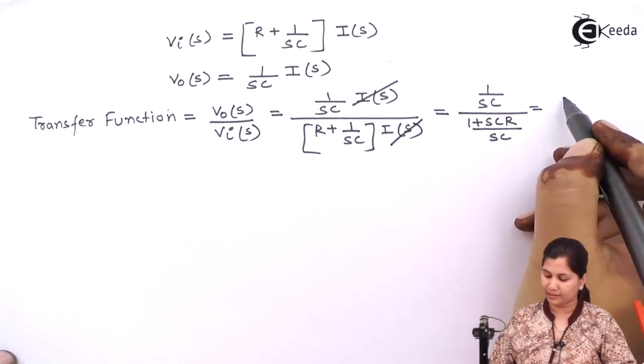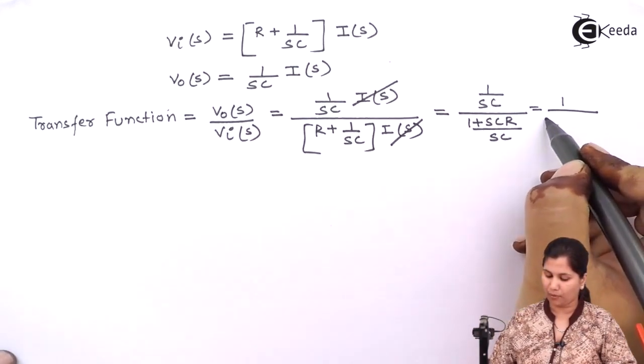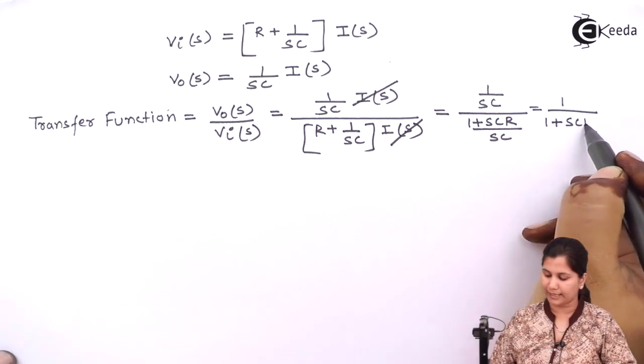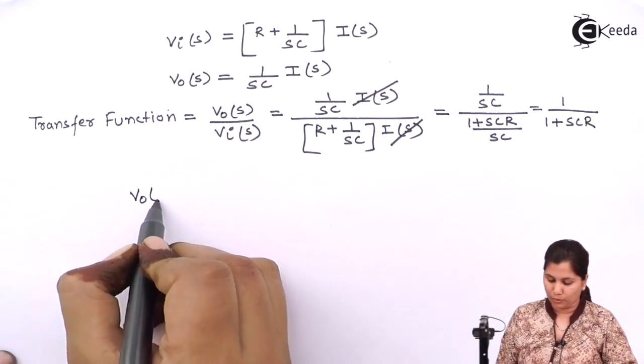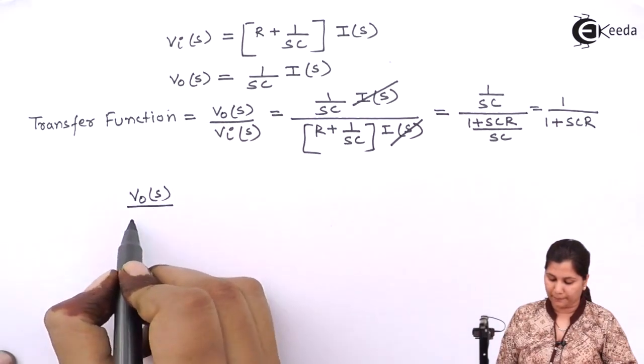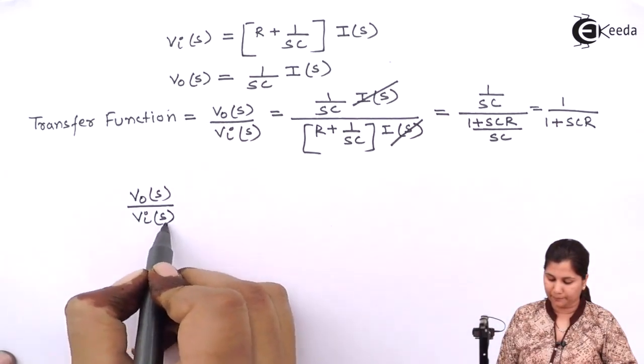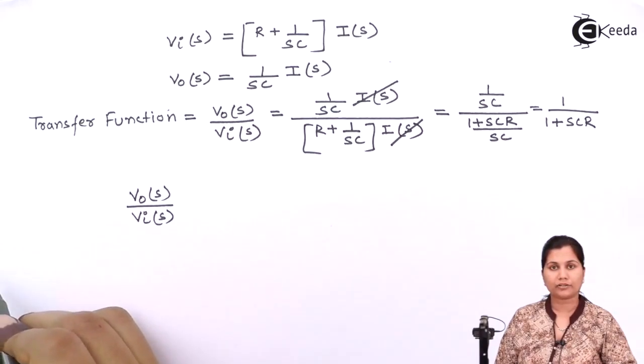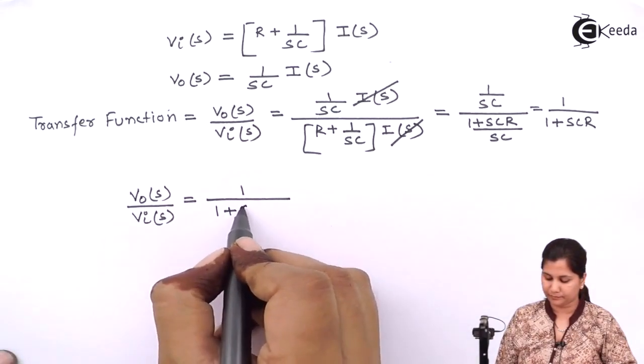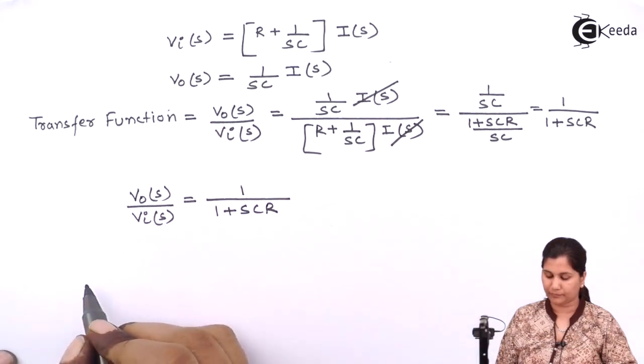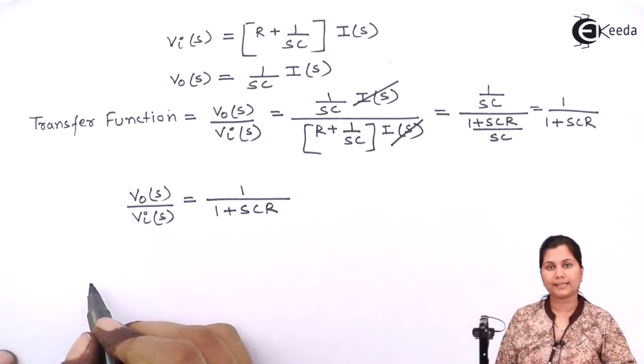We will get 1 upon 1 plus SCR. So the transfer function will be 1 upon 1 plus SCR.